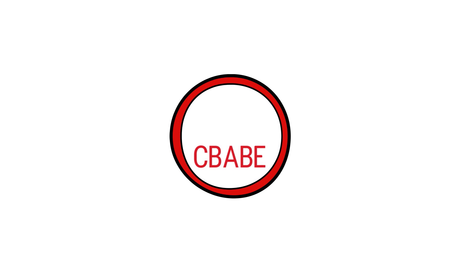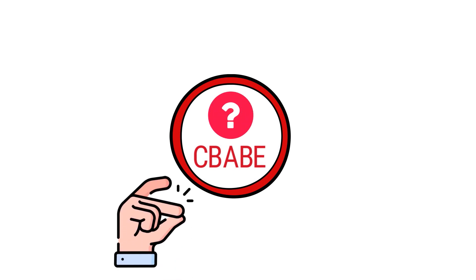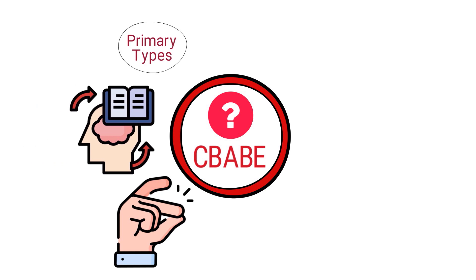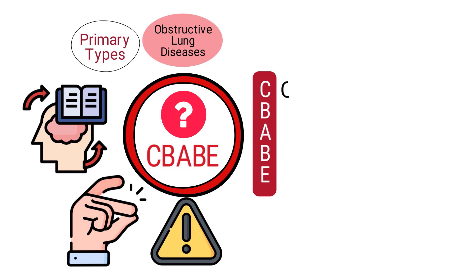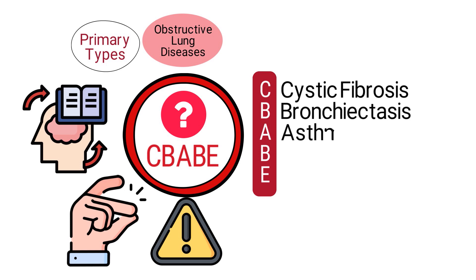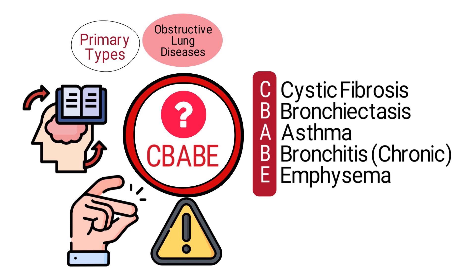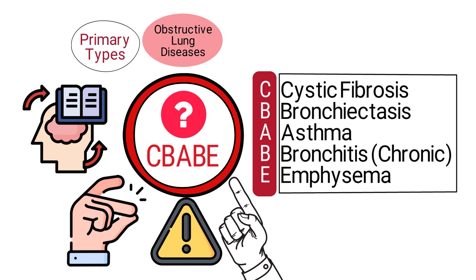First and foremost, let's talk about CBABE. CBABE serves as a mnemonic designed to make it easier to memorize the primary types of obstructive lung diseases. Each letter in CBABE stands for a distinct disorder: C stands for cystic fibrosis, B for bronchiectasis, A stands for asthma, B stands for chronic bronchitis, and E stands for emphysema. By remembering CBABE, you have a handy tool to quickly identify and categorize the main diseases that fall under the obstructive lung disease umbrella.